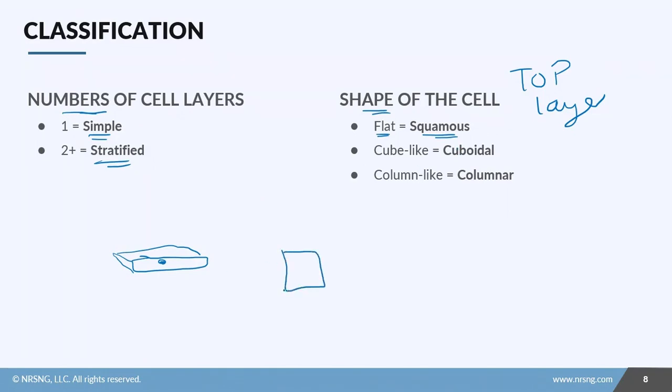If the top layer of cells is cube-like, we call that cuboidal. Cube-like, cuboidal. We try to keep things easy around here. And if the top layer of cells is more like a column, then we call that columnar. Again, we try to keep things easy around here.